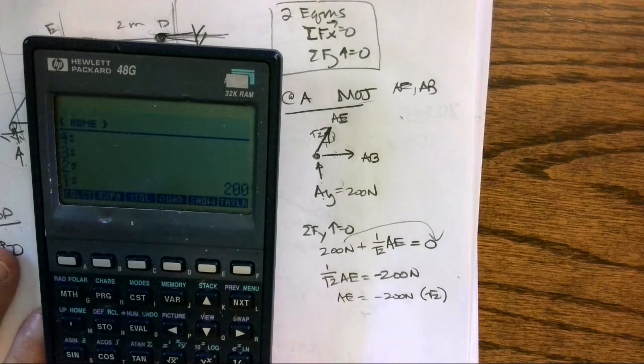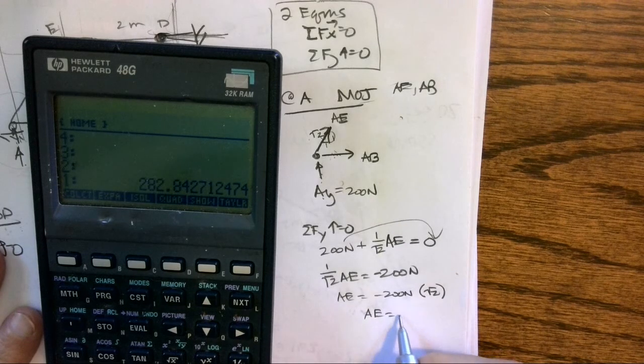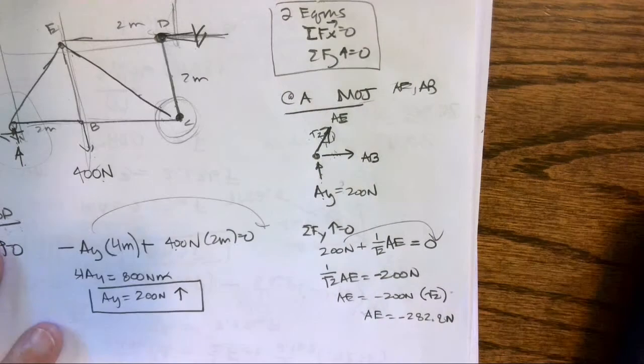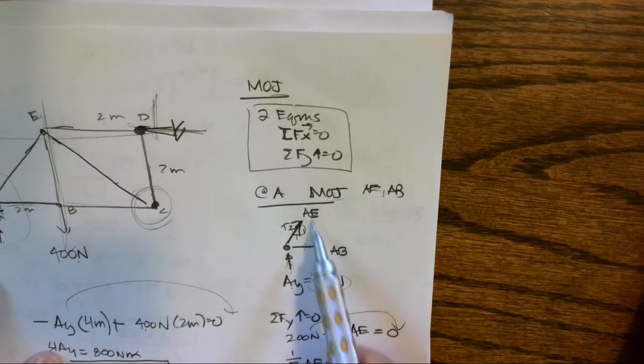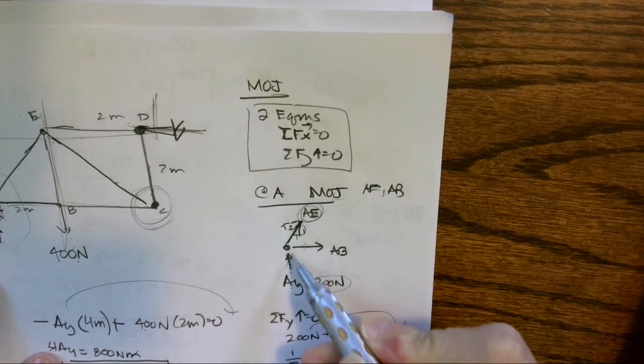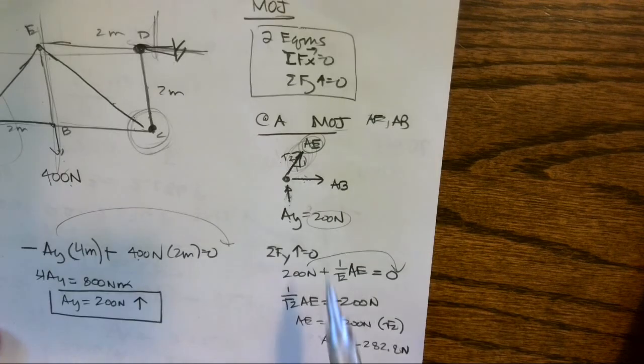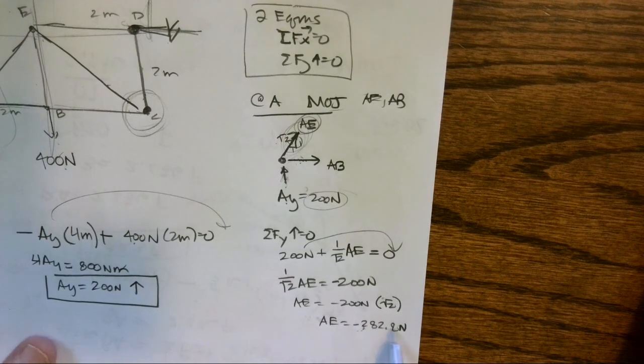And I get AE equals negative 282.8 Newtons. And you know, kind of just think about this: if the Y component is 200, should the value of AE be larger or smaller than 200? And you can see, here's the Y component, the X component—that's kind of the hypotenuse, so it's going to have to be larger than that Y component.